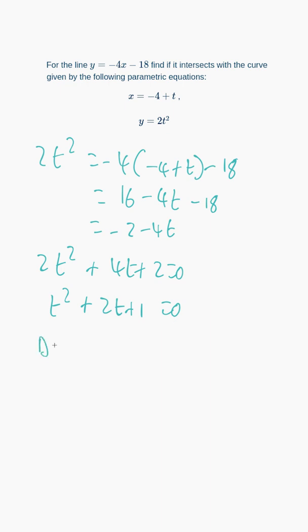If I want to find out if this has solutions, I can work out the discriminant, which is b squared minus 4ac. So it's going to be 2 squared minus 4 times a, which is 1, times c, which is 1.